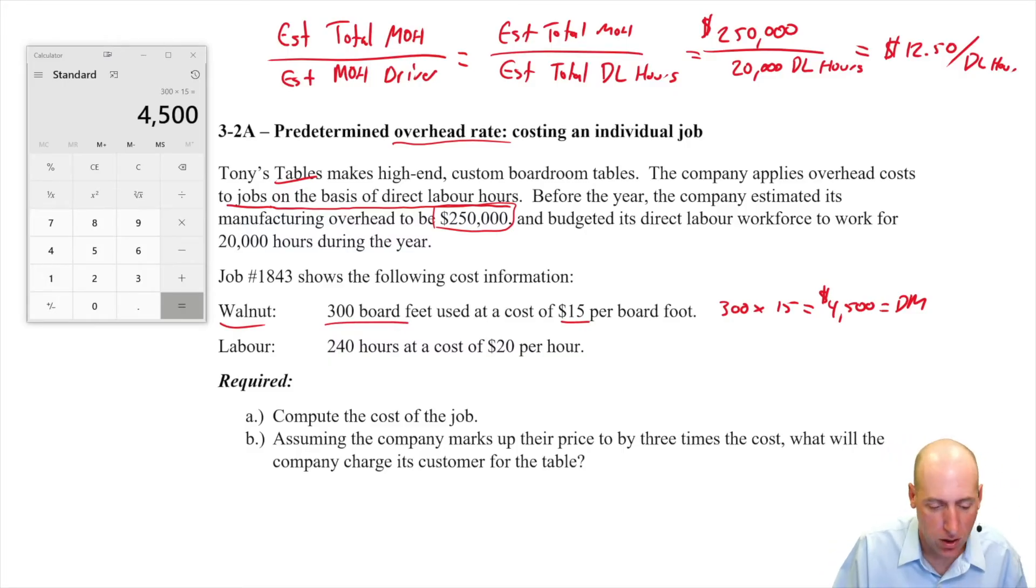It took a lot of hours. It took 240 hours, basically six full-time employees working 40 hours a week. It took them a week to make the table at $20 an hour. So 240 times 20, $4,800 in labor. And that is our direct labor cost.